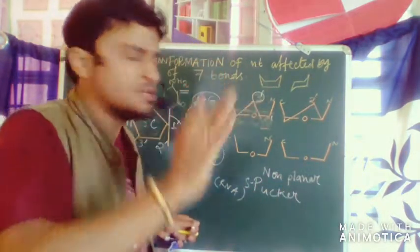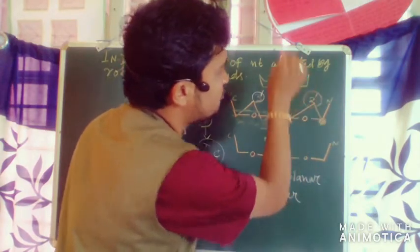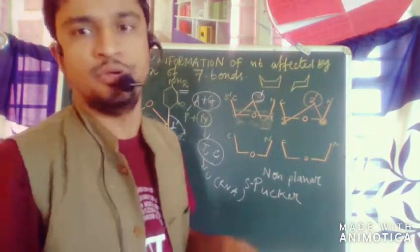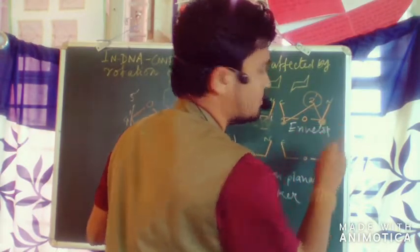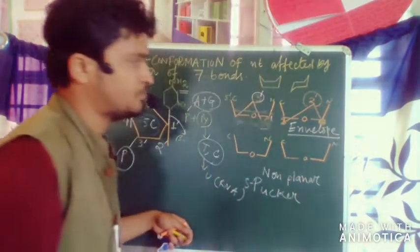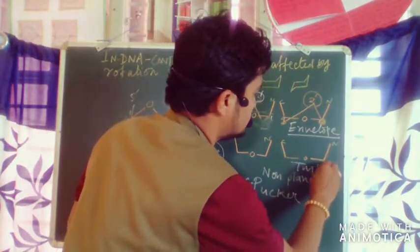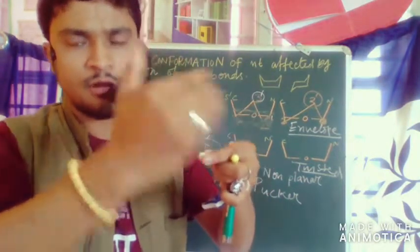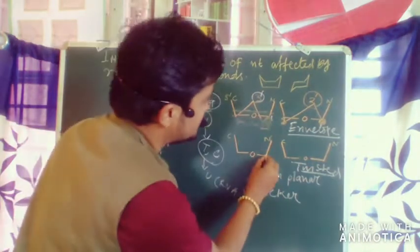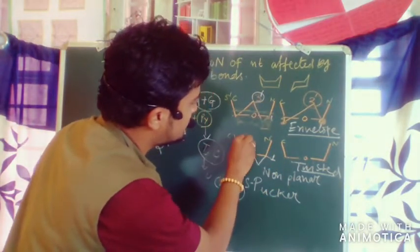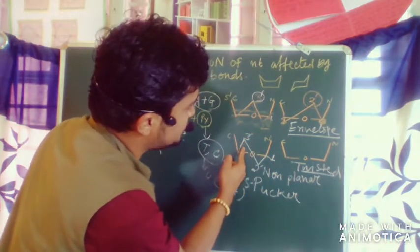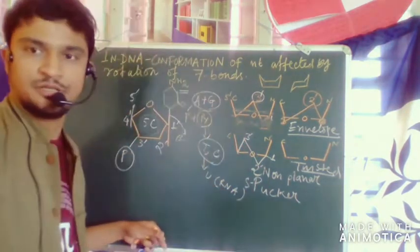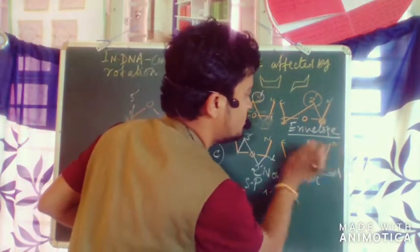Similarly, 2 prime endo puckering means 2 prime is going above the plane while the other atoms remain in the same plane. This form of the pentose sugar is called the envelope form. In the twisted form, two atoms are displaced: for example, 3 prime endo combined with 2 prime exo puckering gives a twisted configuration. You can also have 2 prime endo with 3 prime exo as another twisted combination.